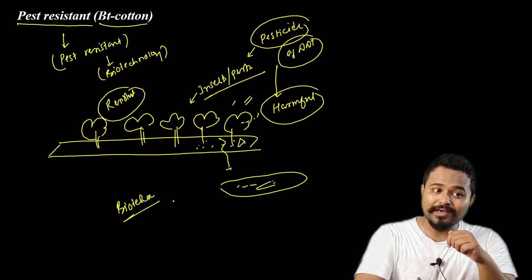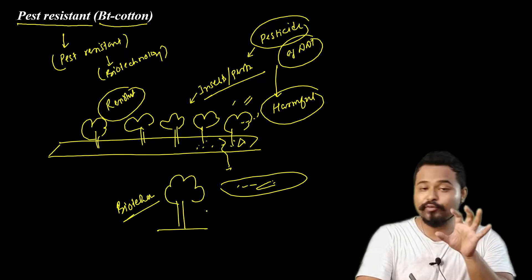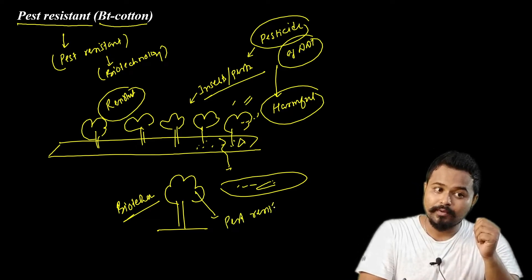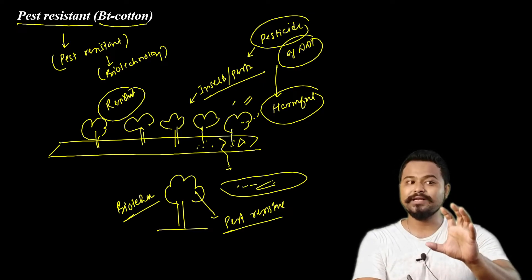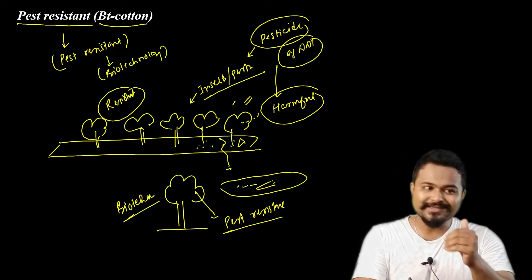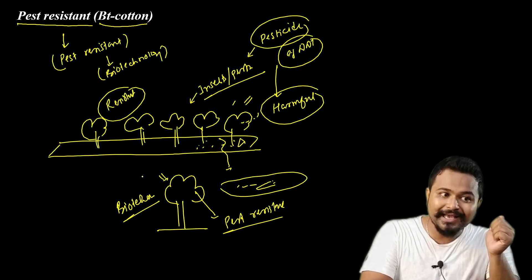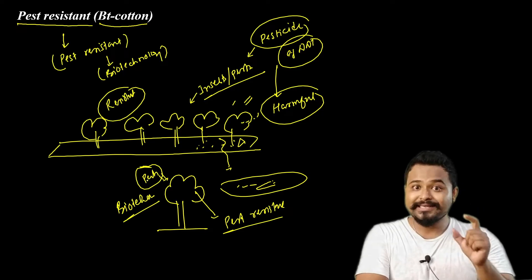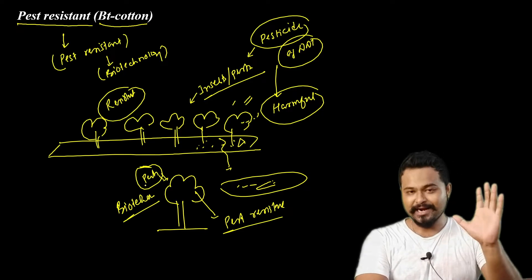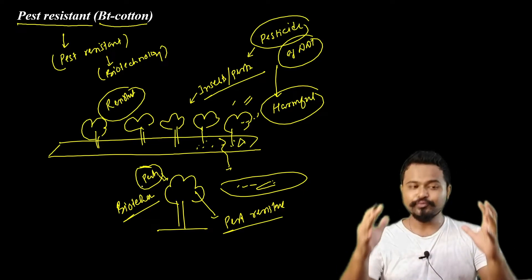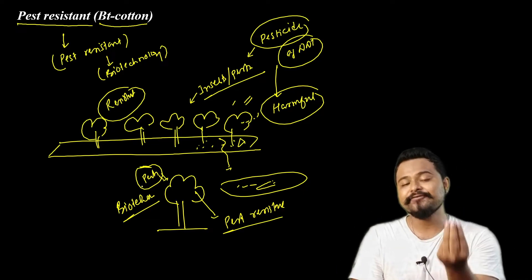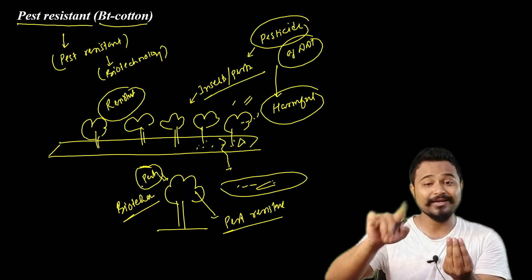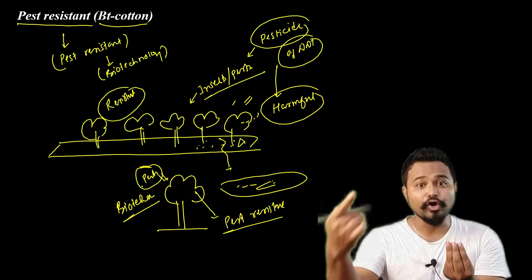With the help of biotechnology, I developed a cotton variety that is already pest-resistant. This pest-resistant variety of cotton is developed so that when pests eat the cotton plant, the pests will die. This way we do not need to use so many pesticides, avoiding their various side effects in the long run.